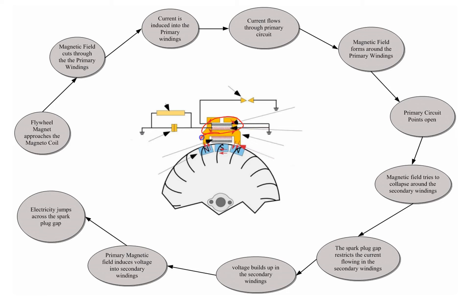When current is flowing through the primary circuit, a magnetic field is created around the primary circuit. That magnetic field also goes around the secondary windings and the secondary circuit. At exactly the right time, the points open. When the points open, current cannot flow through the primary windings anymore, and there is a spike in voltage.